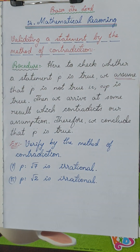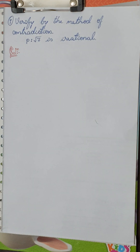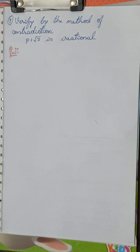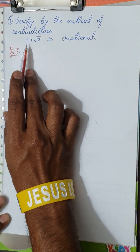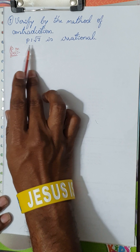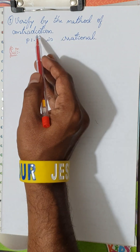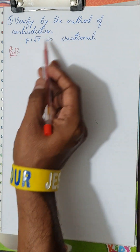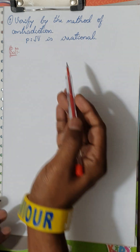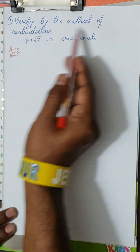Therefore, we conclude that P is true. Now let's take the question directly and go to the solution. Question: verify by the method of contradiction the statement that root 7 is irrational.